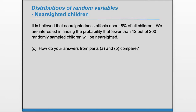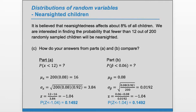Part C: how do the answers from Part A and B compare? They were the same, because the questions are equivalent. In Part A we wanted the probability of getting fewer than 12; in Part B we wanted the probability that the proportion is less than 0.06. But 12 out of 200 is 6%, so these are the same question. The mean and SD values differ between the two approaches, but when we standardize using 12 and 0.06 respectively, we get exactly the same z-score and therefore the same probability.